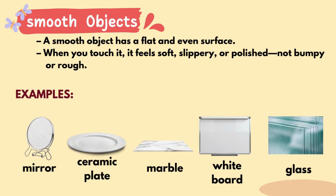What are Smooth Objects? A smooth object has a flat and even surface. When you touch it, it feels soft, slippery, or polished — not bumpy or rough. Examples: mirror, ceramic plate, marble, whiteboard, and glass.